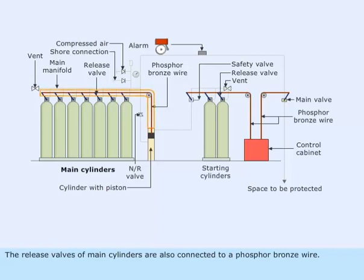The release valves of main cylinders are also connected to a phosphor bronze wire. The other end of the wire terminates at the piston.